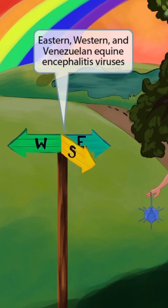We've added a sign to the image because Allison has come to a fork, and now she must decide which way to go. As you can probably tell by the sign, she can go west, east, or south. The east and west symbols on this sign should help you remember eastern equine and western equine encephalitis viruses. The southern symbol should help you think of the South American country Venezuela, or Venezuelan equine encephalitis virus.